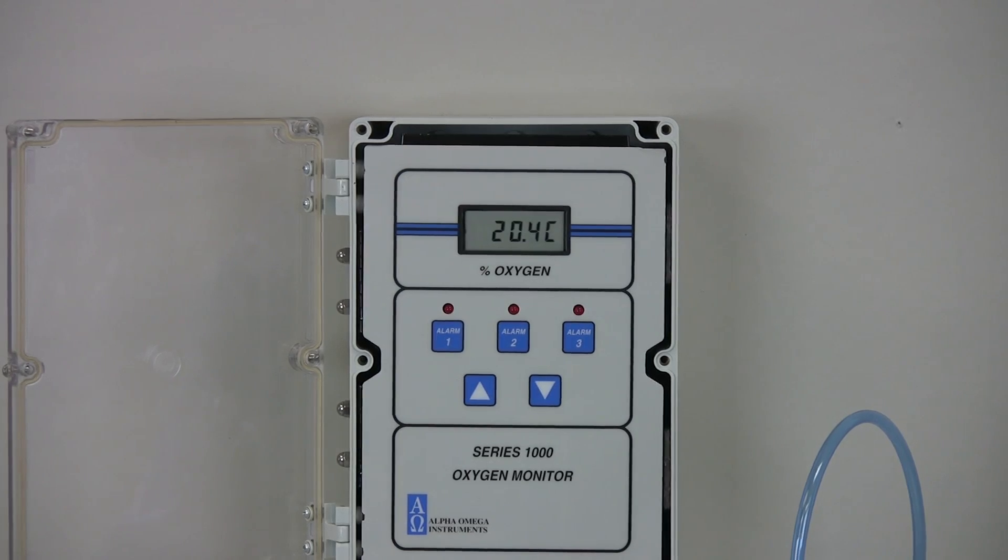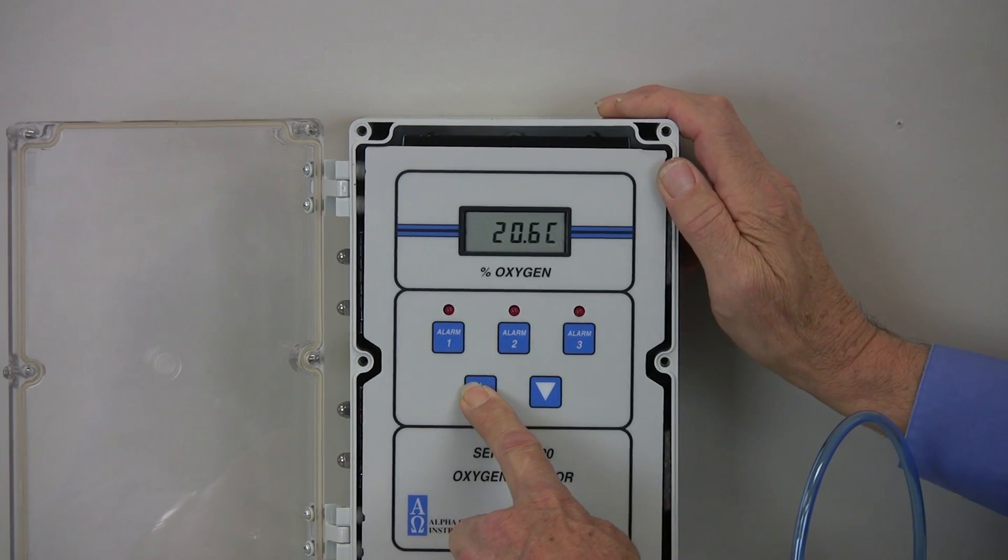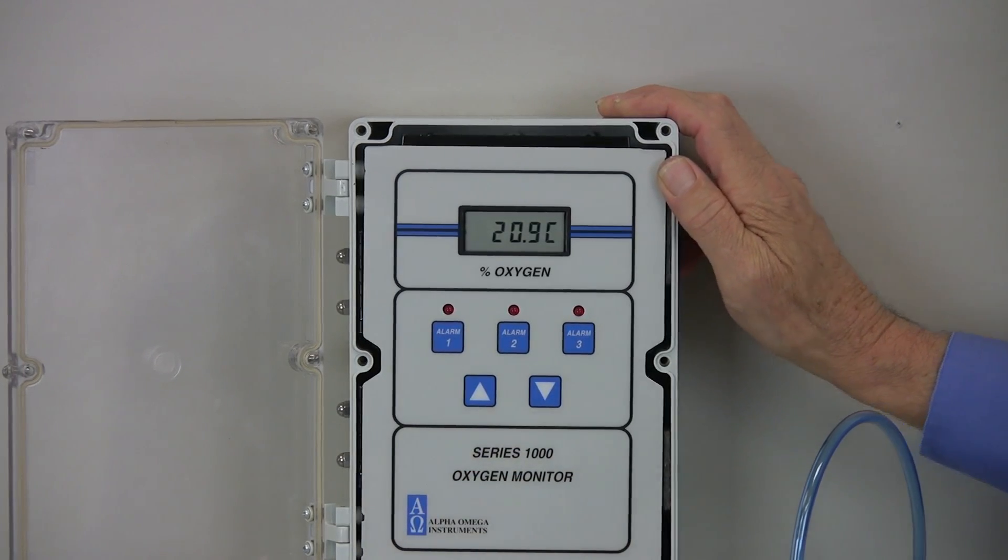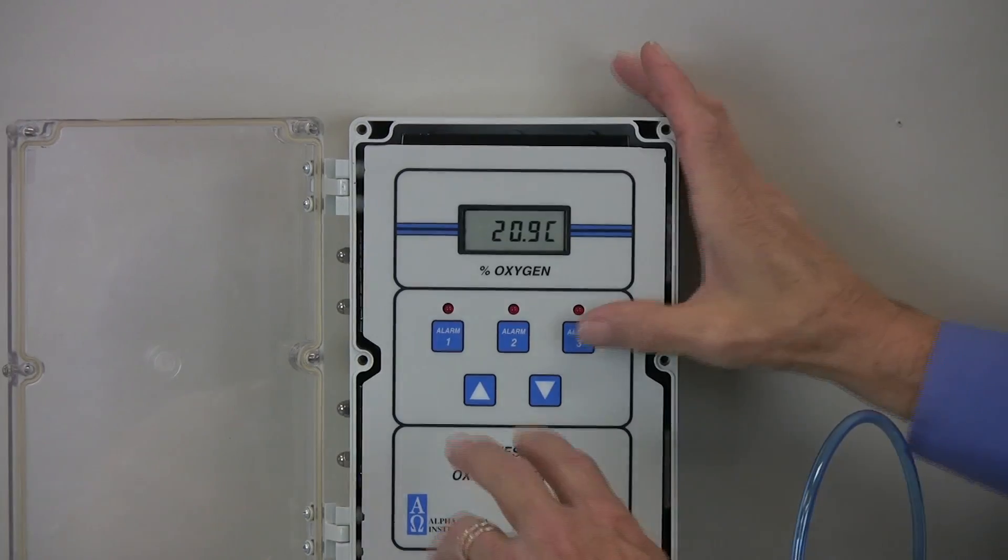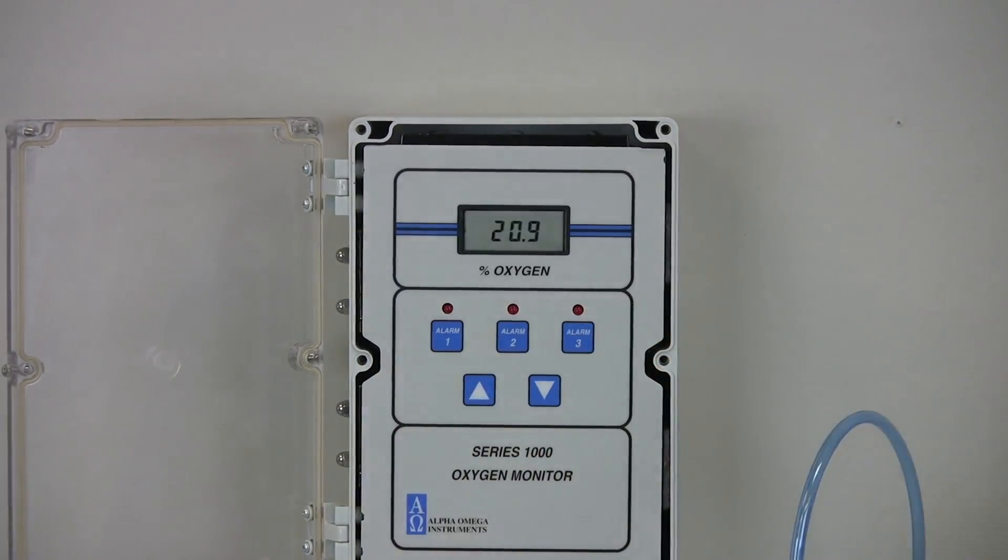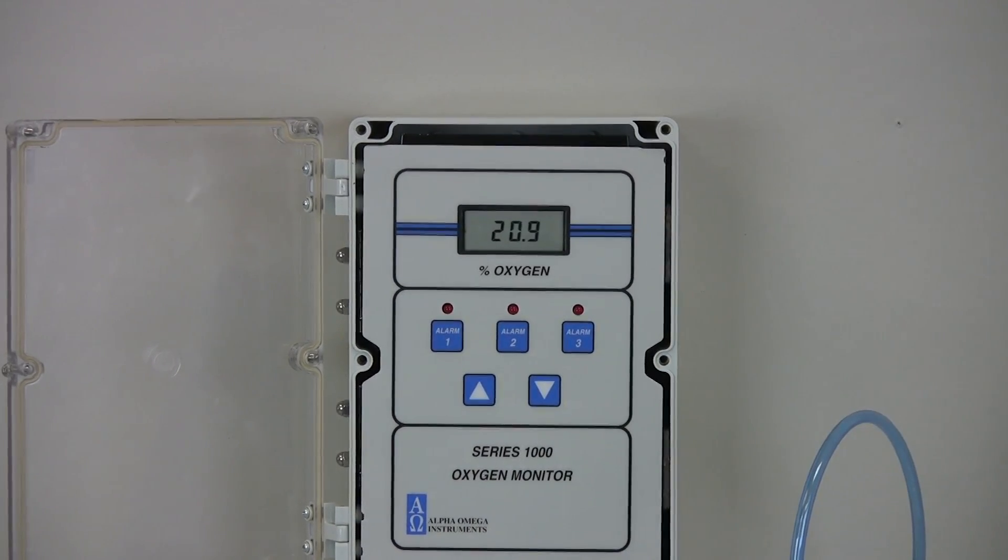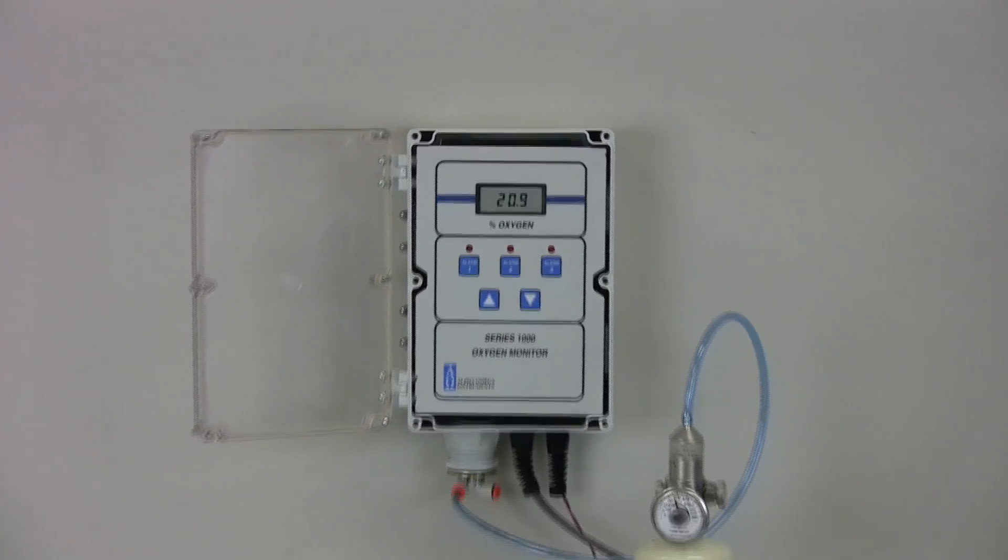Next, use the up arrow or down arrow buttons as needed to adjust the readout to 20.9%. Now, simultaneously press alarm buttons 1, 2, and 3 again. The letter C disappears. Your monitor is now fully calibrated and displays 20.9%.